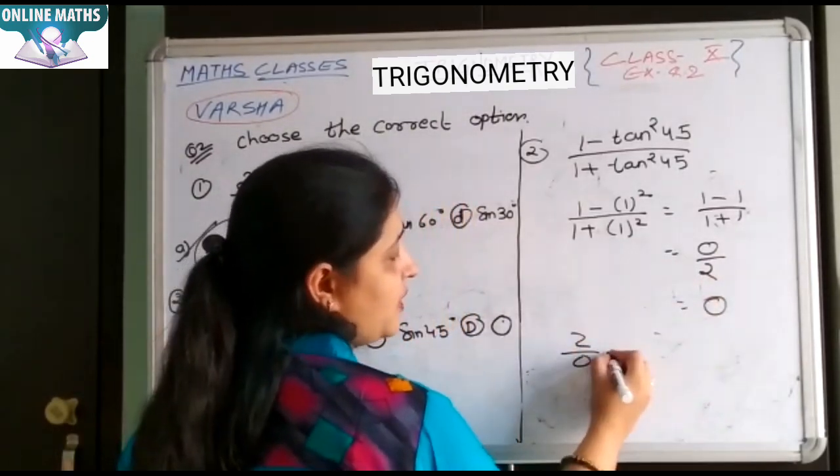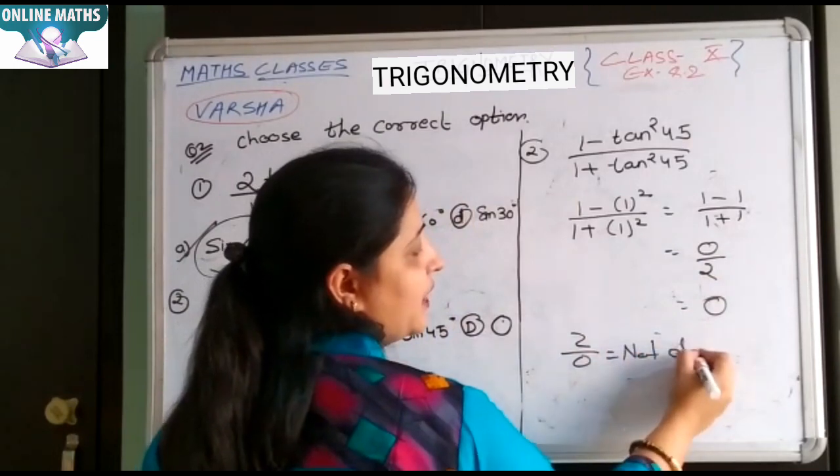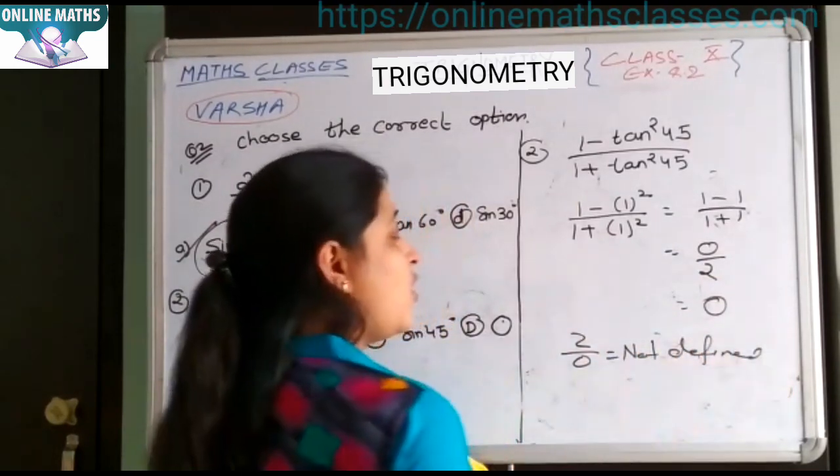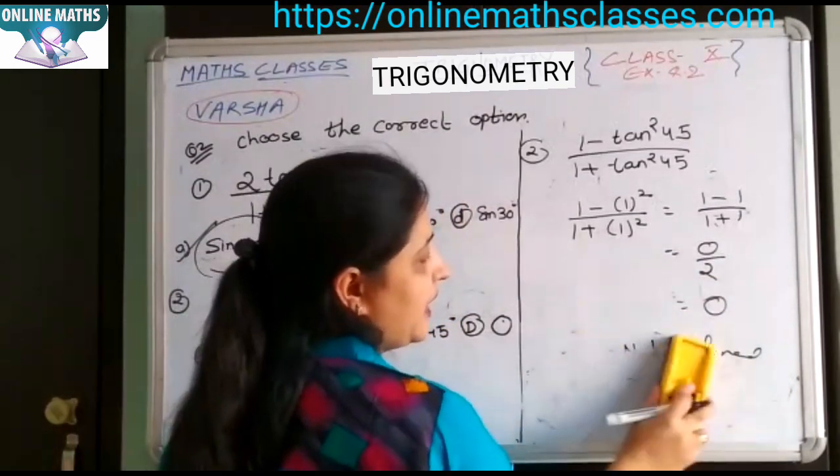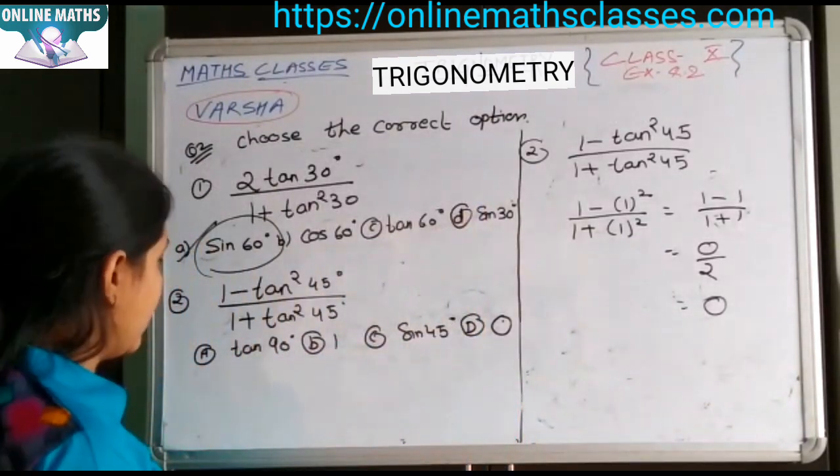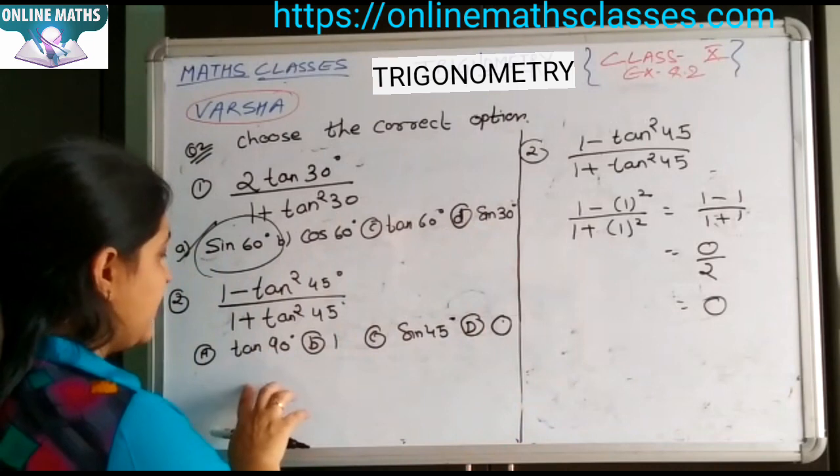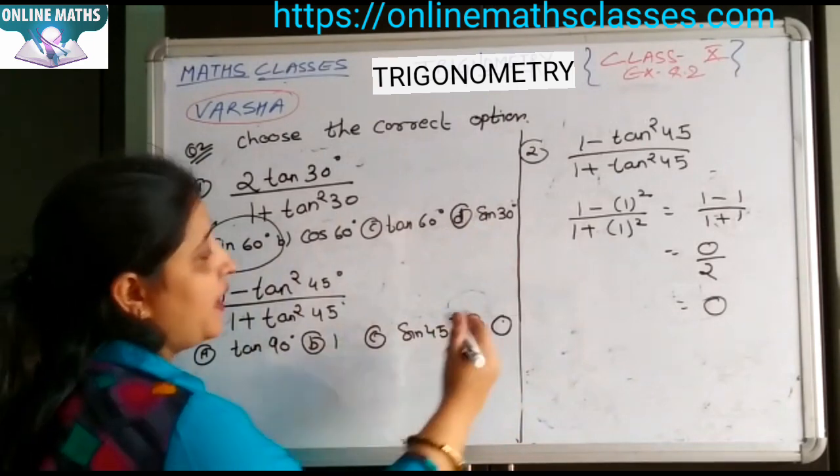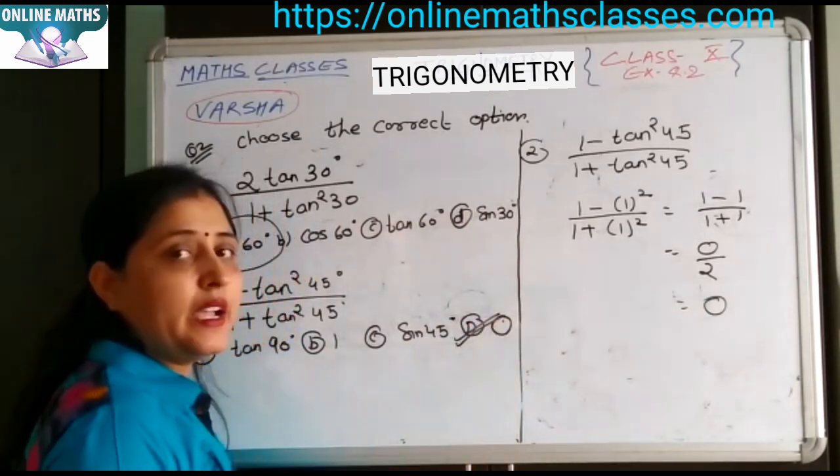0 upon 2 is 0. You will not say 2 upon 0. It means that is not defined. But 0 upon 2 is 0. It means aapka correct answer, correct option kaun sa hai? A is tan 90, B is 1, sin 45. It means aapka correct answer kya hai? D.